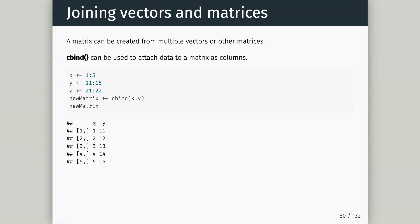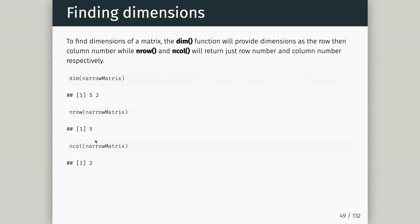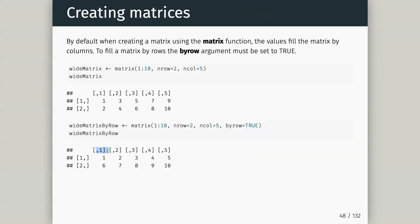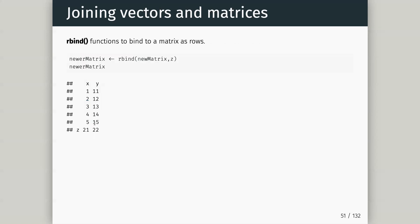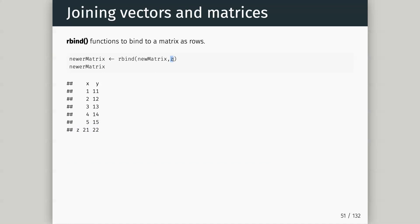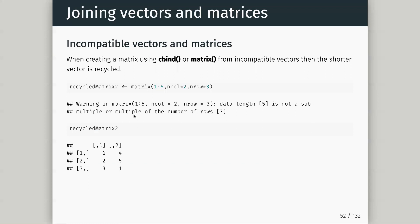When we made the matrix before there were no column names by default. When I used x and y in cbind it did something clever and called the first column x and the second column y. Similarly we can use rbind to bind by row to add something to the bottom, and it takes the actual vector name and attaches that as a row name.